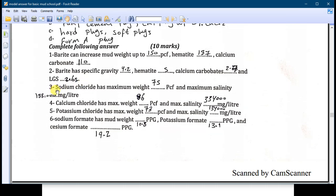Number three: sodium chloride has the maximum weight of 74 or 75 PCF and its maximum salinity is 188 thousand milligrams per liter. Number four: the calcium chloride has the maximum weight of 86 PCF and maximum salinity of 334 thousand.